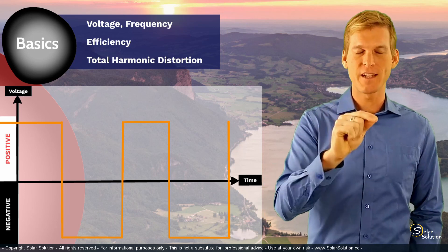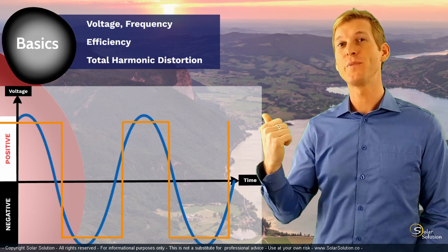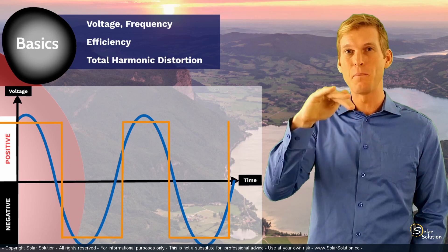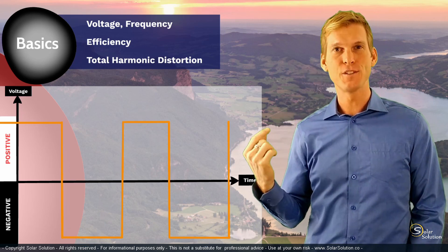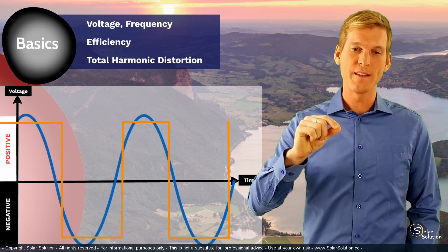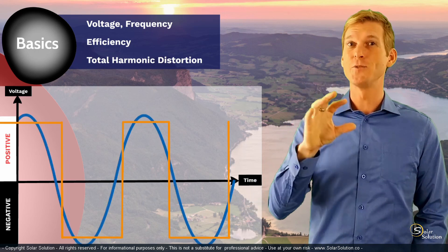The extent to which the output from the inverter, the steppy, blocky kind of output from the inverter, differs from the perfect waveform, the extent to that is the total harmonic distortion.